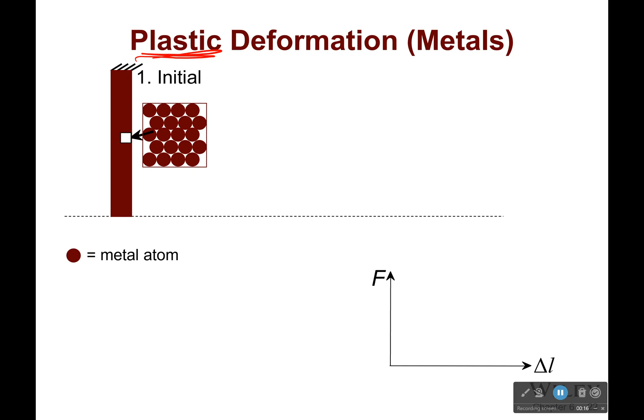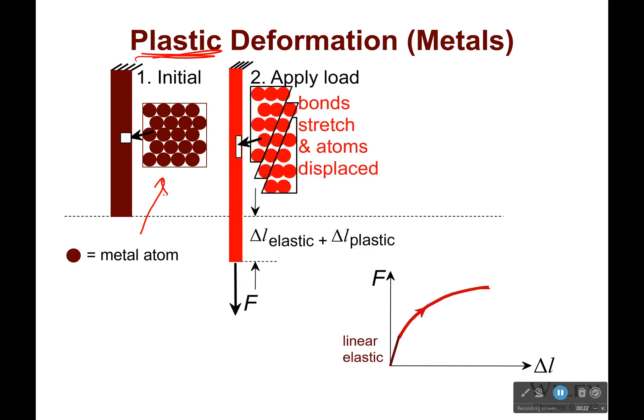Plastic deformation — so what happens? Well, we have our initial set right here, some metal atoms. We apply a fairly large force, a very large force possibly, and we go outside of that linear elastic region. When we do, we reach this non-linear plastic region, and you see that our atoms are not only stretched, but they're displaced. They're no longer in the same lines that they were before. They have switched planes.